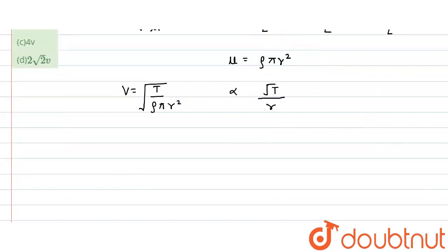If we take two velocity values, we say that v₂ divided by v₁, what would be the relationship between v₂ and v₁? For v₂ it would be proportional to square root of T₂ divided by r₂. For v₁, it would be directly proportional to T₁ and inversely proportional to r₁.